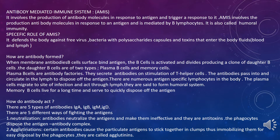AMIS defends against bacteria with polysaccharide capsules and toxins that enter body fluids such as blood and lymph. When membrane antibodies on B cell surfaces bind to antigens, the B cell is activated and divides, producing a clone of daughter B cells. Daughter B cells are of two types: plasma B cells and memory cells.